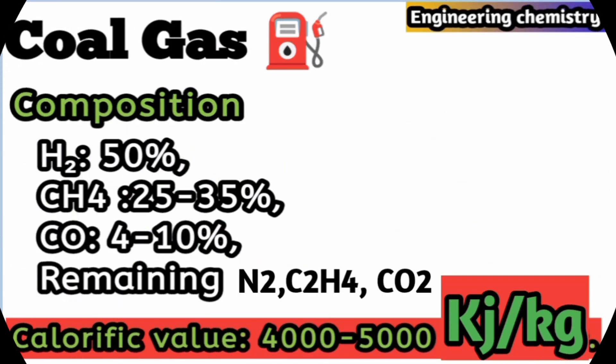The composition of coal gas is: hydrogen is 50 percent, methane is 25 to 35 percent, and carbon monoxide is 4 to 10 percent. The remaining components are nitrogen, carbon dioxide, and ethane.